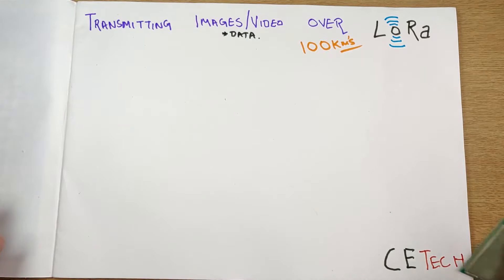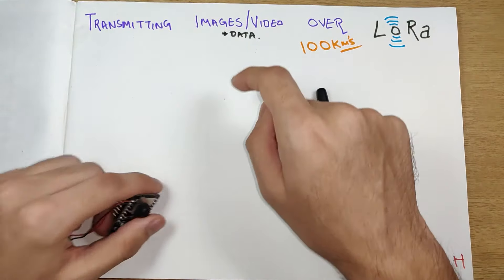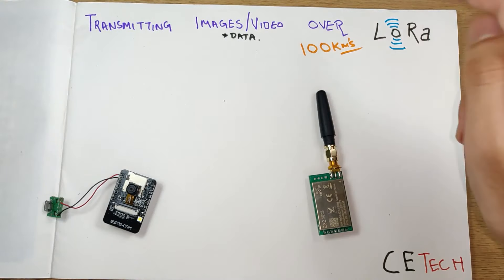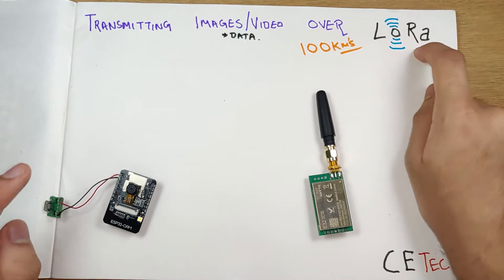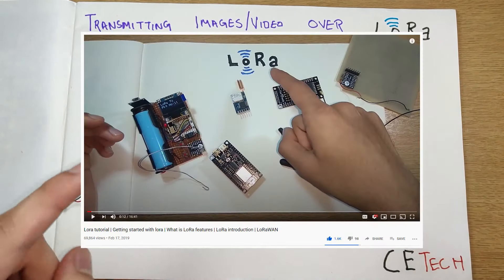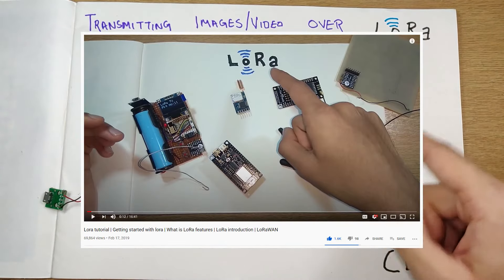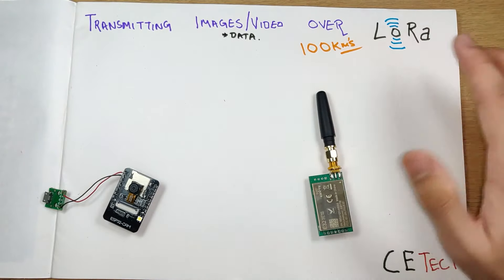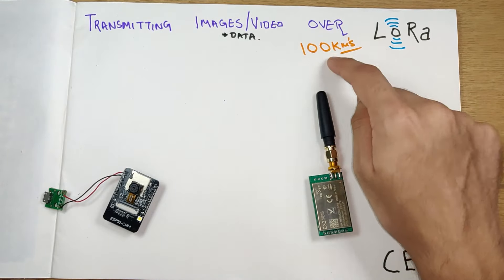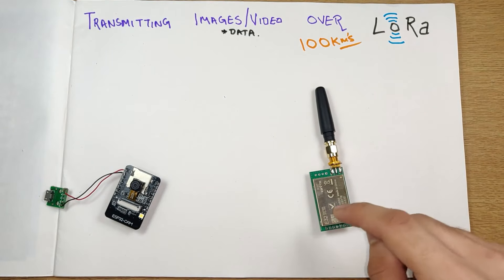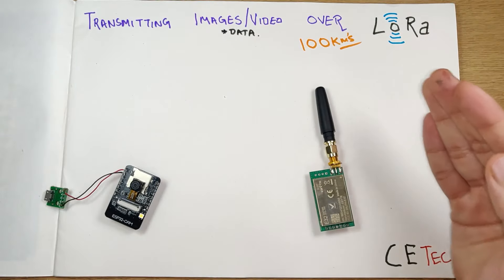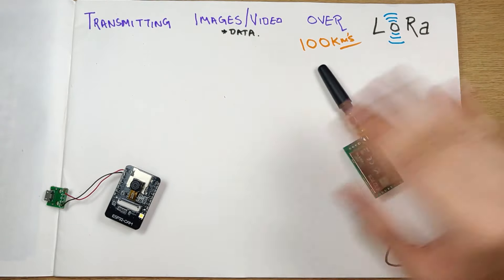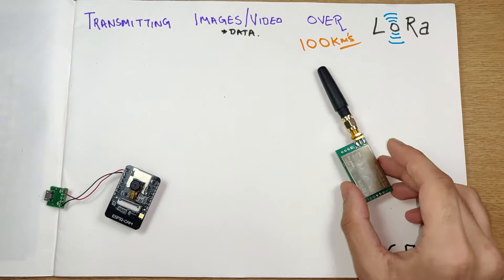Hey yo, what is up guys, Akarsh here back with another video. Yes, you read it right, today we will be transmitting images or videos over a hundred kilometers. This is possible using the technique known as LoRa. If you're not familiar with LoRa technique, go check this video out. Basically, you can transmit data over hundreds of kilometers using small modules like these, and there's no need for internet, GPS, GPRS, or satellite communication.